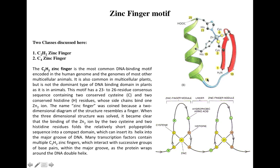This motif basically consists of roughly 23 to 26 residues and also contains an alpha helix. These proteins were called zinc finger motifs because their 2D structure resembled a human finger. These 26 amino acids could fold themselves into finger-like structures, and these fingers can penetrate themselves into the major grooves of the DNA and interact with the nitrogenous bases.